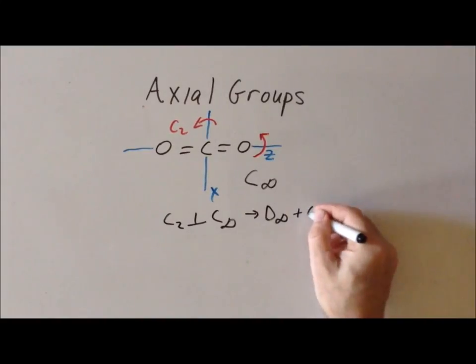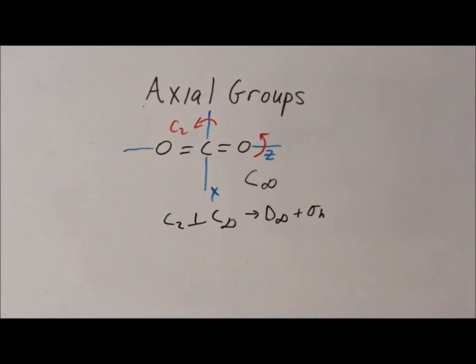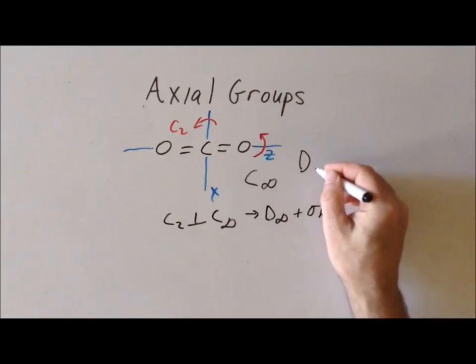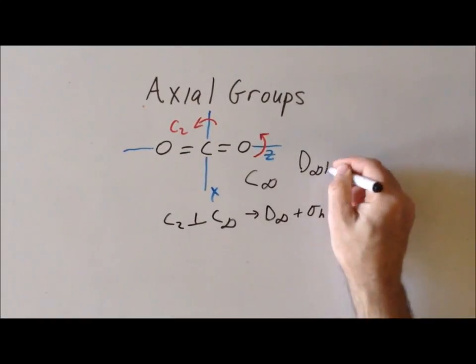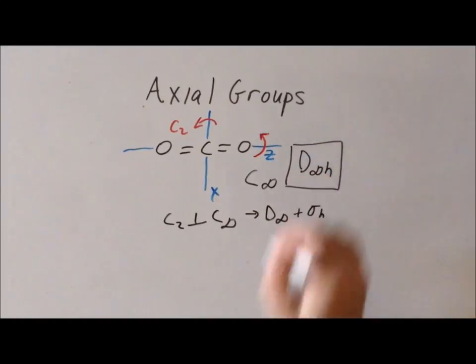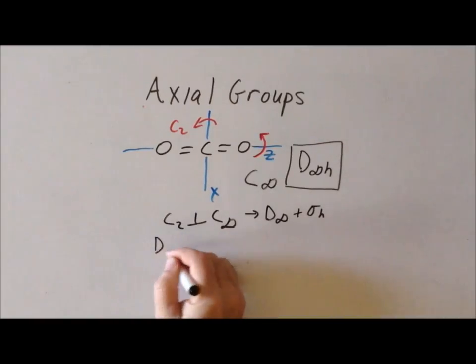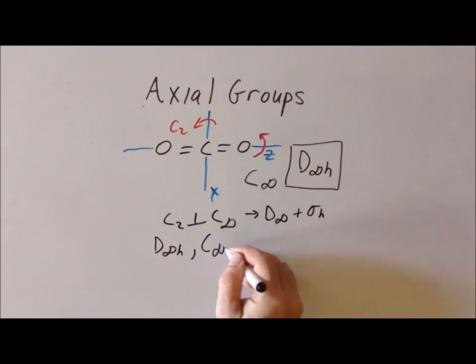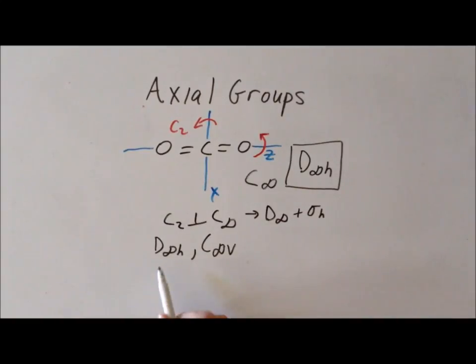So since we have a sigma h, and we have a D infinity group, this allows us to assign the point group assignment of carbon dioxide to the other axial group, D infinity h. One thing is very important. There are two and only two axial groups. It is either going to be in D infinity h or C infinity v. Be careful that you do not switch the h and the v. If you were to try to make a D infinity v or a C infinity h group, those groups do not exist. So they could never possibly be the correct answer to a question.